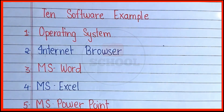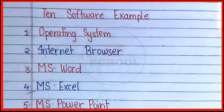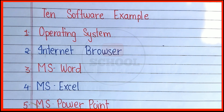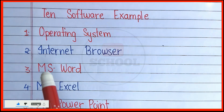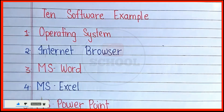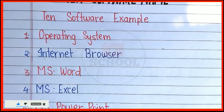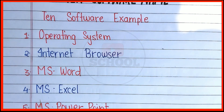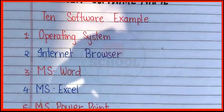10 Software Examples. First: Operating System. O-P-E-R-A-T-I-N-G S-Y-S-T-E-M. Second: Internet Browser. I-N-T-E-R-N-E-T B-R-O-W-S-E-R.